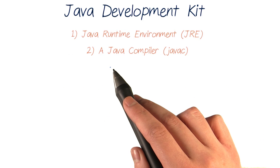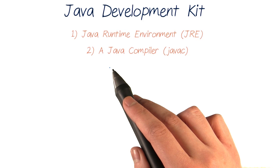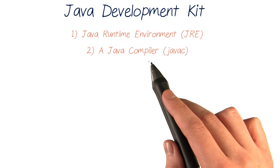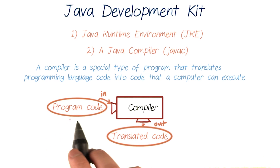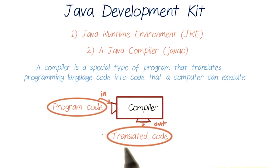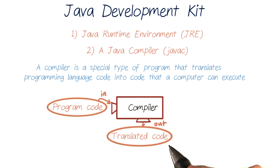But to develop our own programs and Java apps, we need a second tool: the Java compiler. A compiler is a special type of program that translates code written in a particular programming language, like Java, into a form that a computer can actually understand and run.